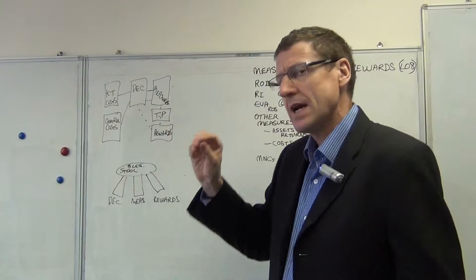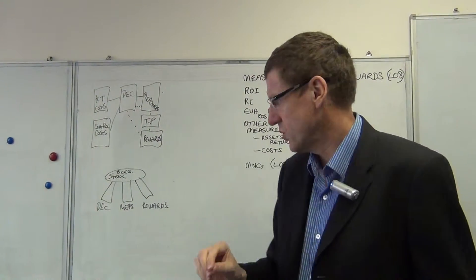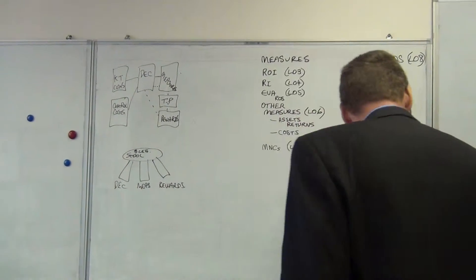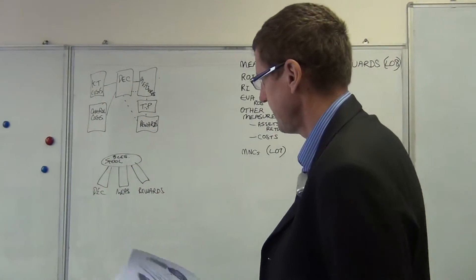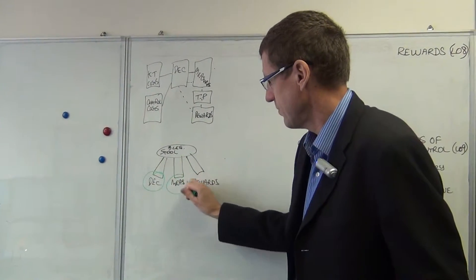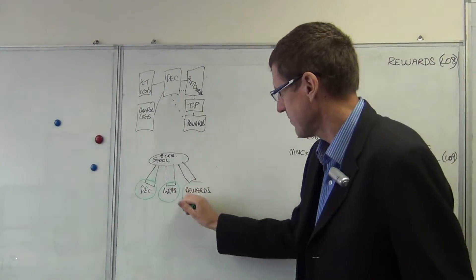What we didn't cover in detail were the two other legs of the stool. So let's consider what we've got in terms of three-legged stool. We have decentralization, then we have performance measurement, and we have rewards.